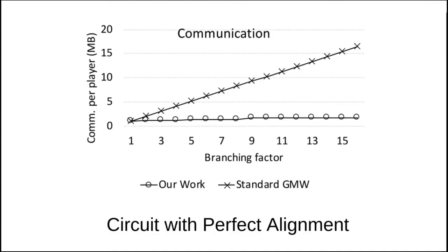We implemented our approach and compared motive to the standard GMW protocol. In the experiment above, we plot the overall per-player communication as a function of the number of branches in the conditional. The experiment was run in two-party computation and on a circuit that compared two bit strings on each branch. For 16 branches, motive outperformed standard GMW by factor 9.4. We did not get factor 16 improvement for two reasons.